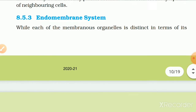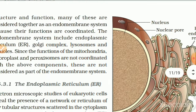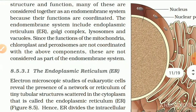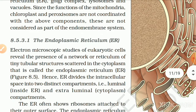8.5.3 Endomembrane System. While each membranous organelle is distinct in structure and function, many are considered together as an endomembrane system because their functions are coordinated. The endomembrane system includes the endoplasmic reticulum (ER), Golgi complex, lysosome and vacuole. The mitochondria, chloroplast and peroxisomes are not considered part of the endomembrane system, as their functions are not coordinated with the above components.